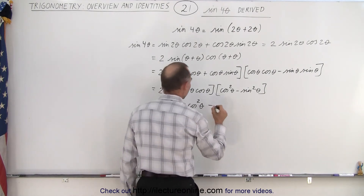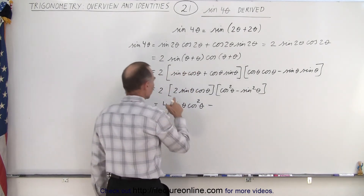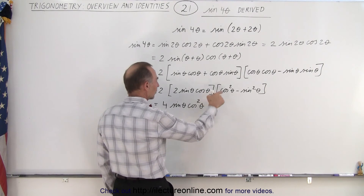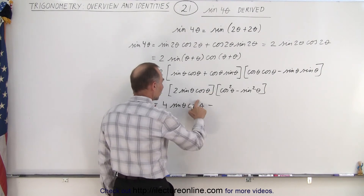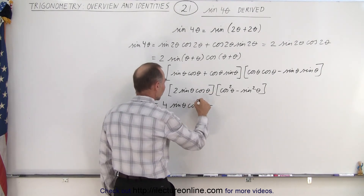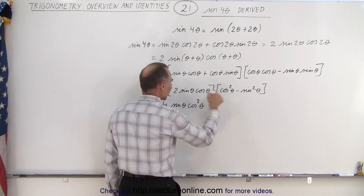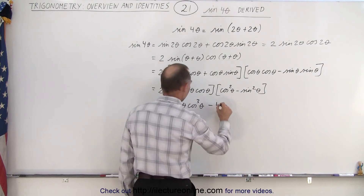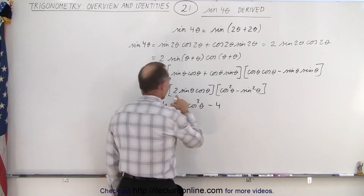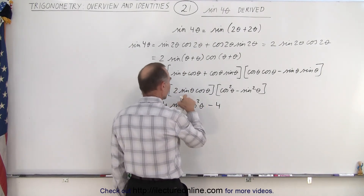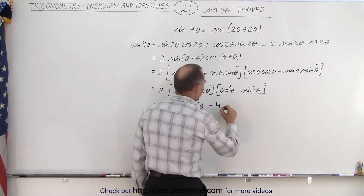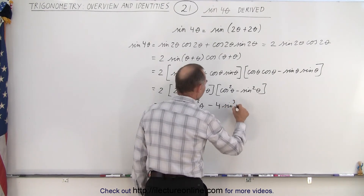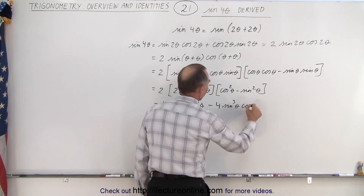Then minus — that's not squared, that's cubed — the cosine cubed of theta, which is cosine times cosine squared. And here we get minus 4 times the sine cubed of theta times the cosine of theta.